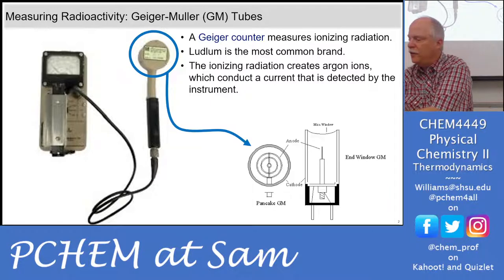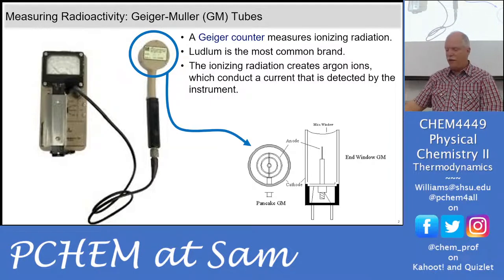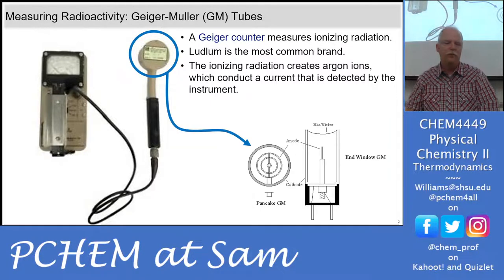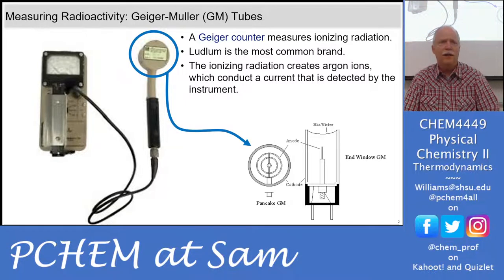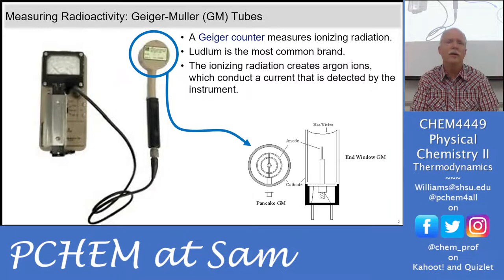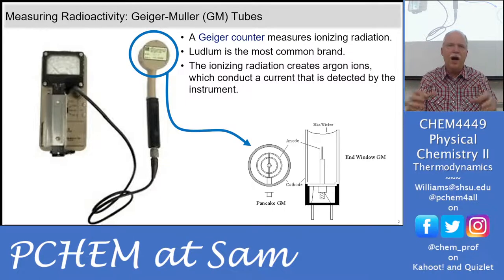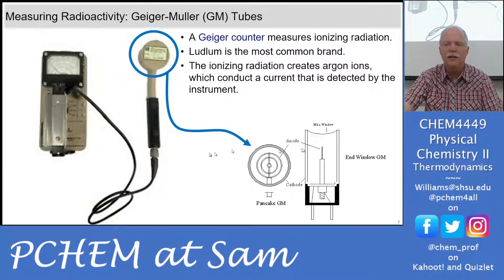These little survey probes give you a range value — they're not really good for counting in research or for characterizing a material precisely. For that you need a much more controlled environment. They make scintillation detectors where you put the material inside a lead-lined box — it's really dark and they look at flashes of light. I'll show you a scintillation detector next.